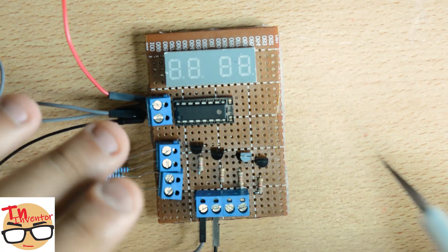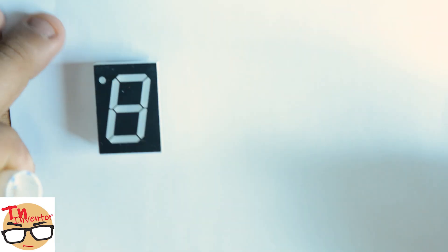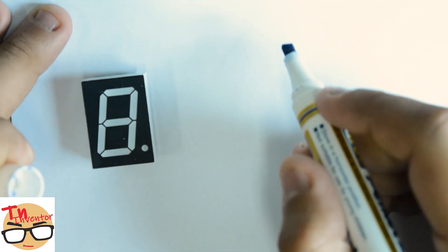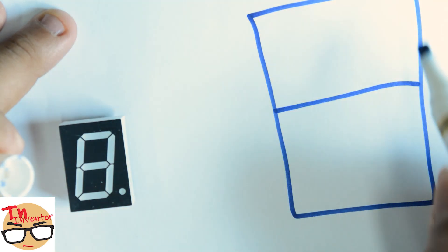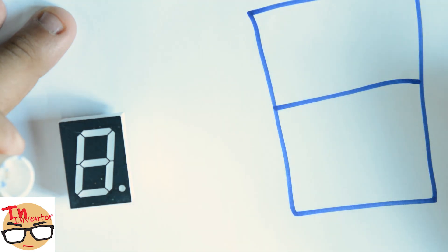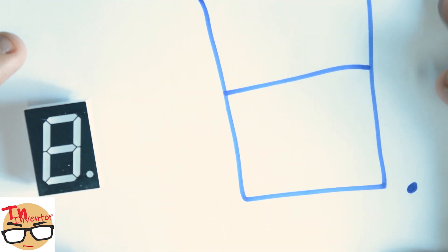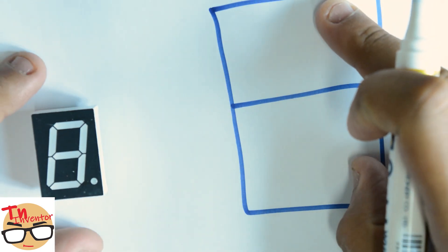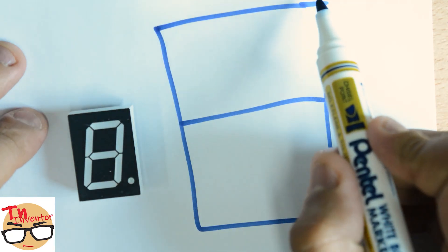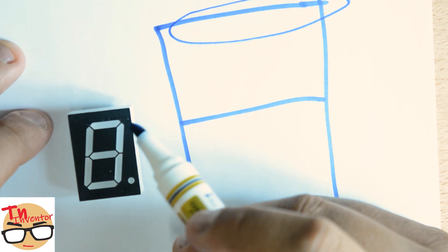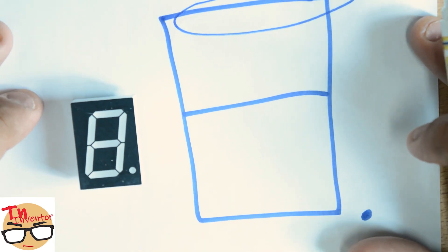First, to understand how to use a seven-segment display, we need to see what's actually inside it. I'm not going to take one apart because that would be a pain. Instead, I'm going to try my best to draw it, even though I'm bad at drawing. We have seven segments, that's why it's called a seven-segment display.